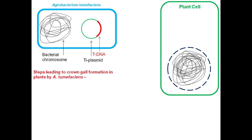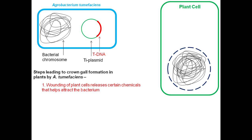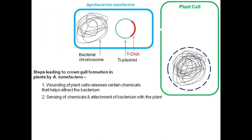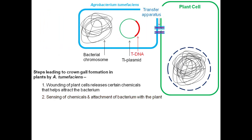Now, let us see the steps leading to crown gall formation in plants due to Agrobacterium tumefaciens. The first step is wounding of the plant cell, which releases certain chemicals that help attract the bacterium. In response to this, the bacteria senses the chemical and results in the attachment of the bacterium with the plant, resulting in the formation of a transfer apparatus.